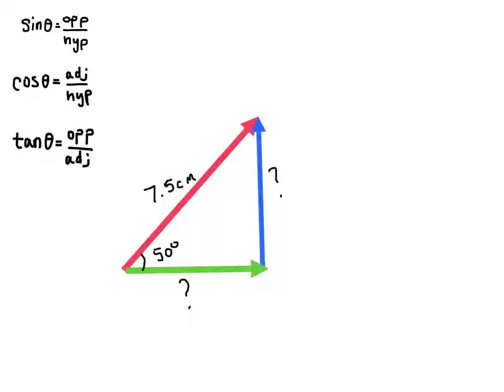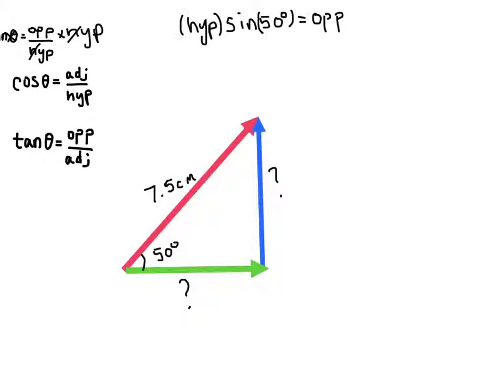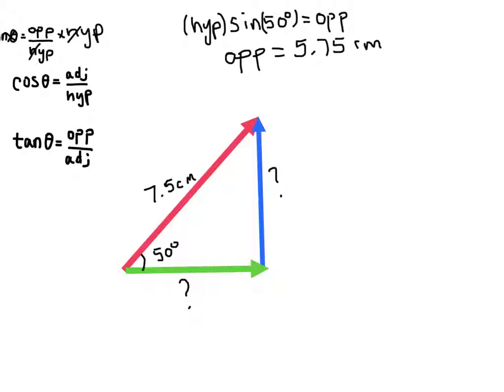I need to manipulate this to solve for the opposite side. I'll multiply both sides by the hypotenuse, which cancels it on one side and isolates the opposite side. So the hypotenuse times the sine of 50 degrees equals the opposite side. This is 7.5 centimeters times sin(50°). When we do the math and punch that into the calculator, we get 5.75 centimeters. That's the blue side.